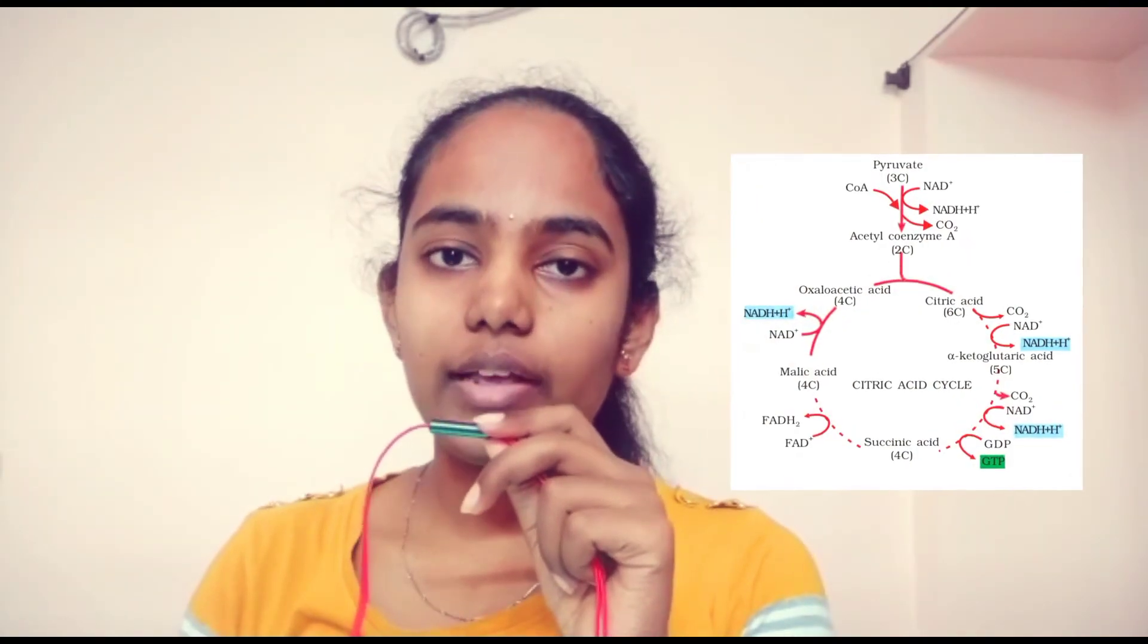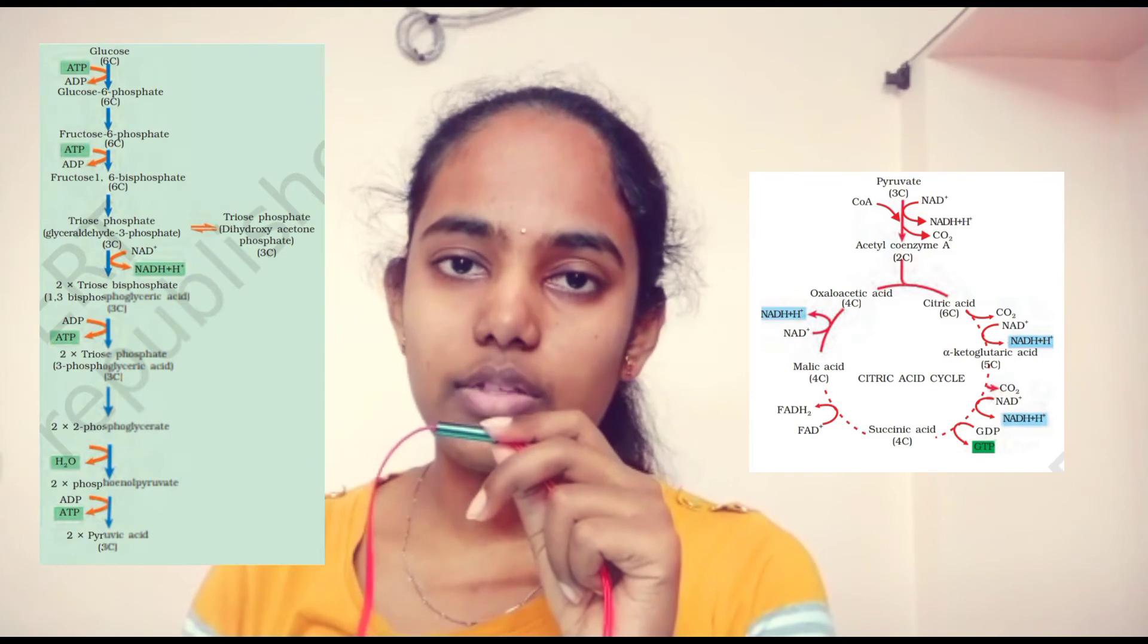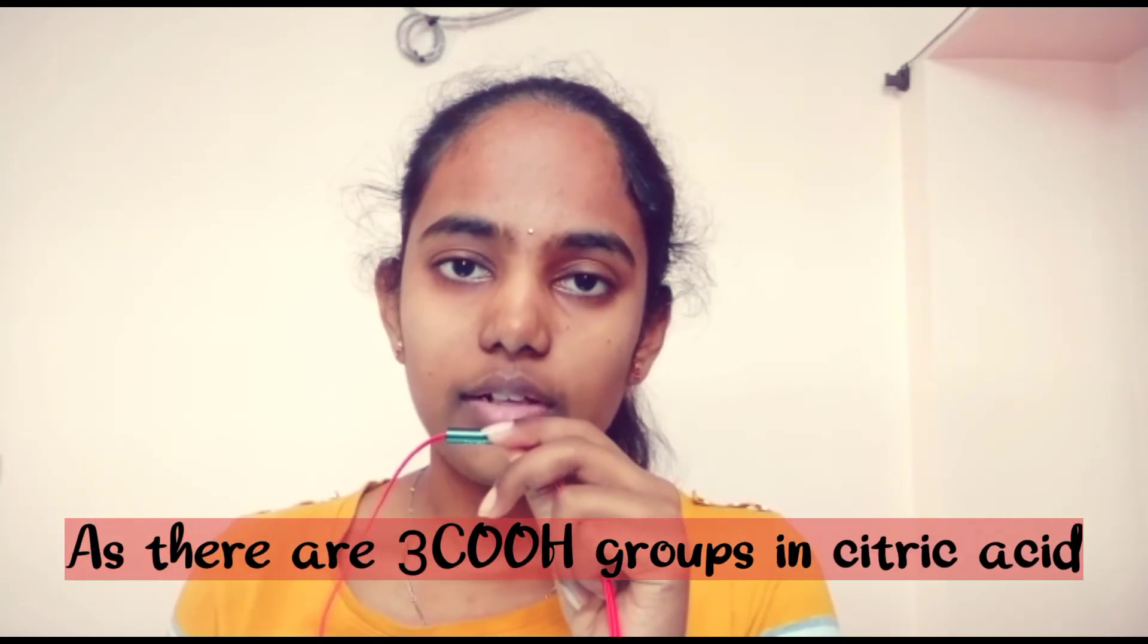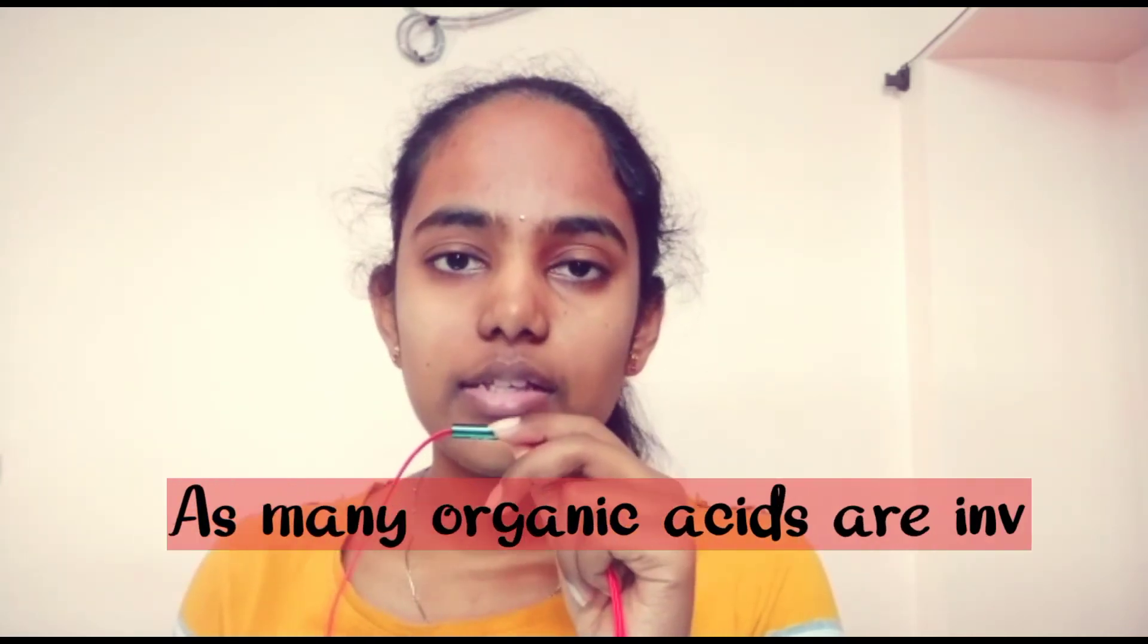Now, coming to the Krebs cycle, it is explained by the scientist Hans Krebs. So, the name Krebs cycle. It is a cyclic pathway, unlike glycolysis. Glycolysis is a linear process. It also occurs in matrix of the mitochondria, same as link reaction. It is also called by many other names like tricarboxylic acid cycle, organic acid cycle.